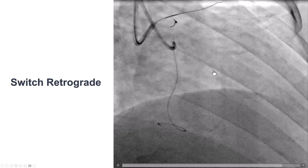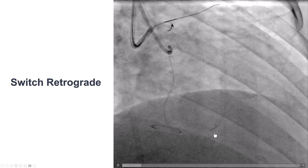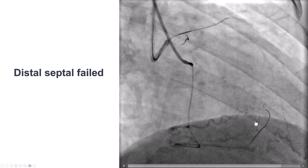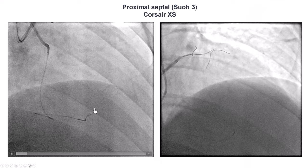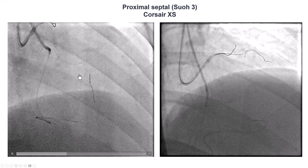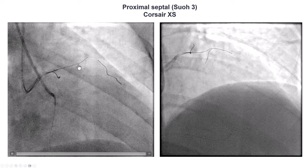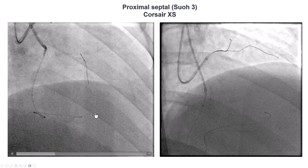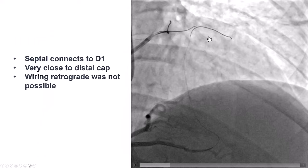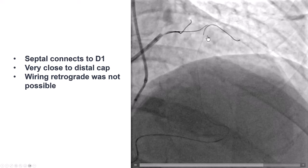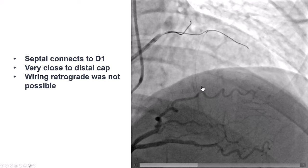We advanced a microcatheter and did a selective tip injection. We tried to advance a guidewire through a distal septal branch — that was not successful. We then used a more proximal septal, and a SUO 3 guidewire was able to be advanced relatively easily across the LAD. Unfortunately, the septal connects literally at the distal cap, which is one of the limitations of going retrograde through more proximal septals. It took us a while to realize that the wire was actually going into a diagonal branch — this was not the LAD, but the septal was connecting with the diagonal branch.